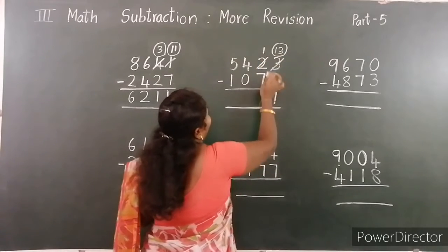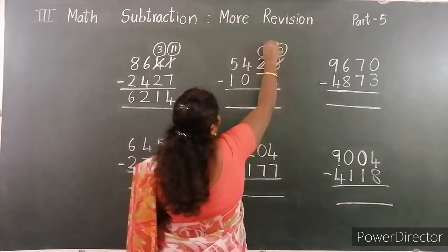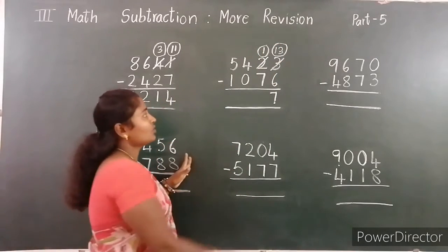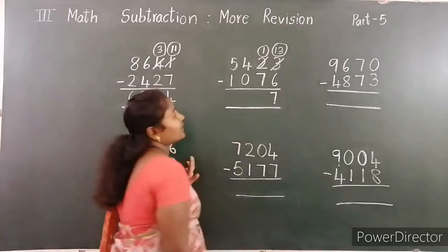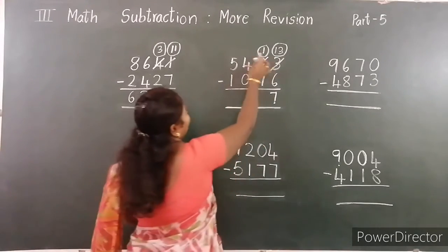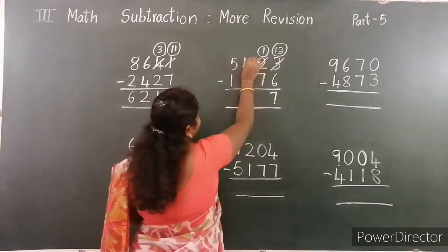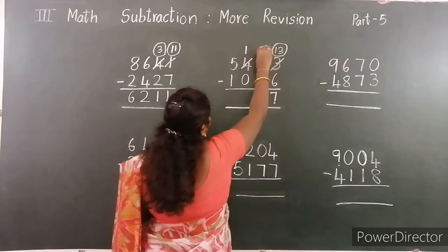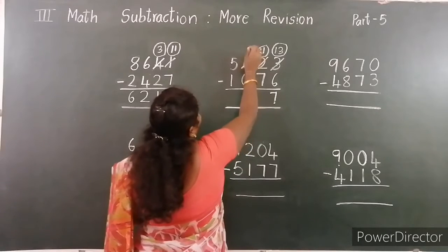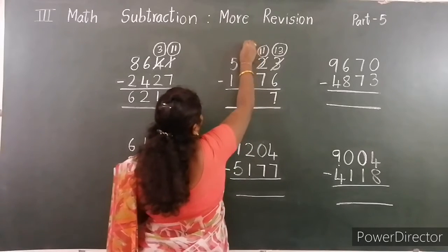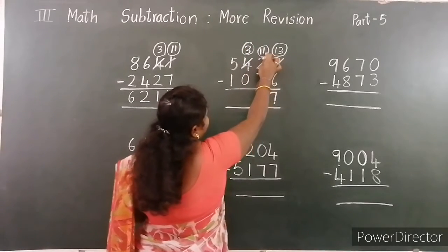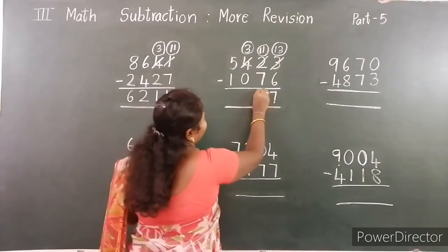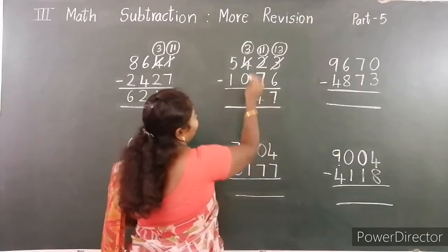Now tens place: 1 minus 7. 1 is smaller than 7, so borrow from the hundreds place. Here 11, here 3 left. Now subtract: 11 minus 7 — the difference is 4.